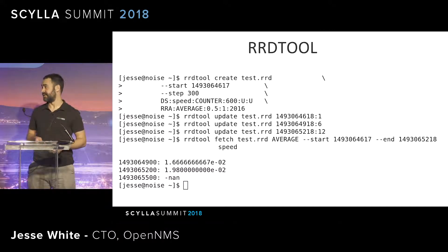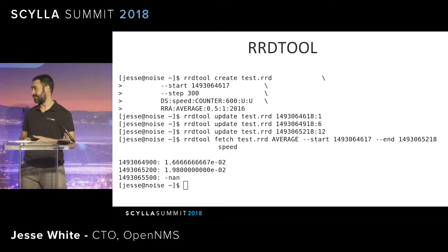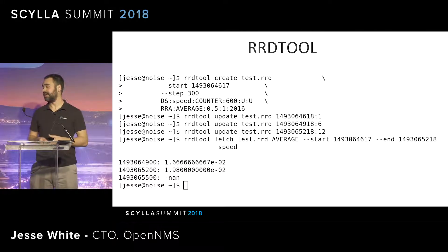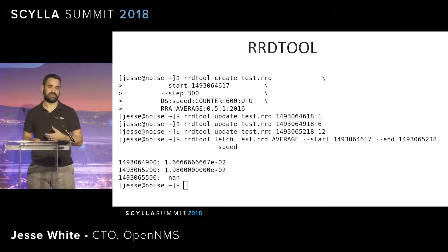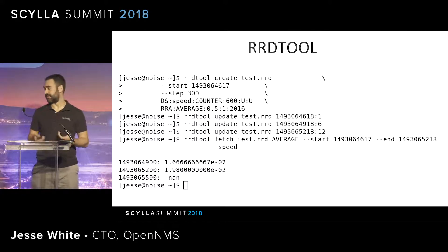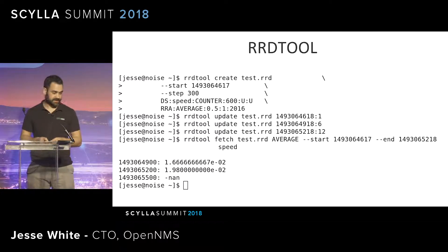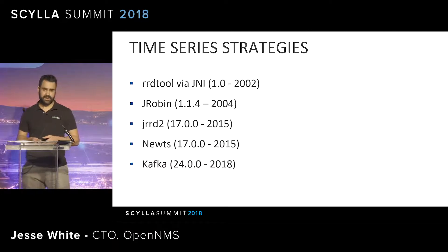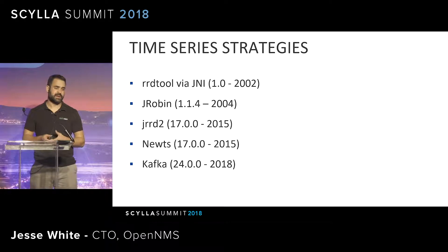Looking at the first command at the top, that's a quick example. You define the file name, how many different data sources, how data is aggregated, how frequently you expect to push data to it, and so on. After that you can push metrics and retrieve the data. There are also utilities for graphing. Originally we started using RRDTool, interfacing with it through JNI, a native library — that was back in 2002.